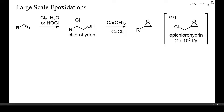One older strategy to convert alkenes into epoxides is by intermediate preparation of a chloro- or bromohydrin by treatment with halogens in water. The halohydrin can then be cyclized with bases. Epichlorohydrin is currently still produced this way and is an important intermediate for the preparation of glycidyl ethers as monomers for epoxy resins.